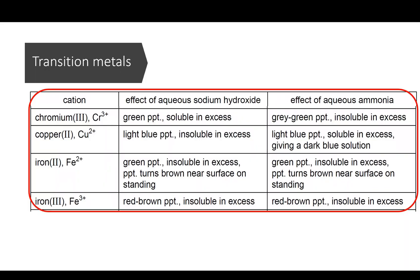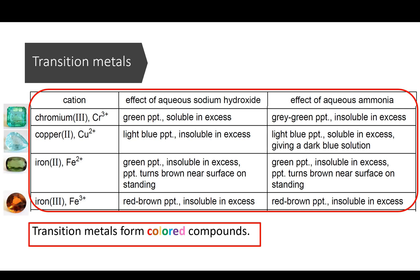The next block that I'm going to address is the transition metal ions. A lot of transition metal ions form colored compounds, like gems. These contain transition metal ions. Chromium-3, copper-2, iron-2, and iron-3 all form insoluble precipitate with sodium hydroxide and ammonia, except these two tests.